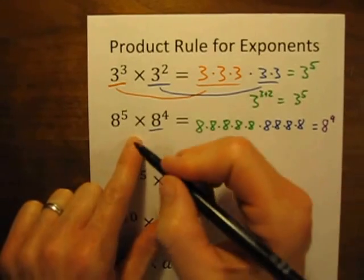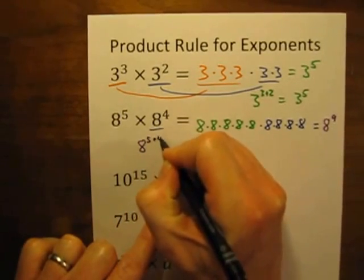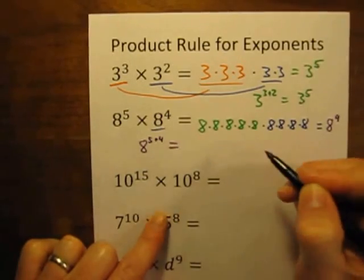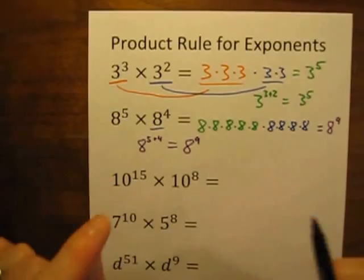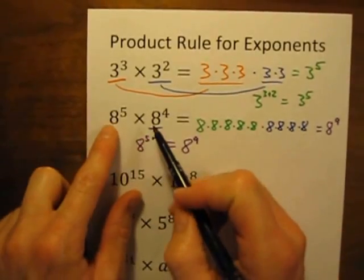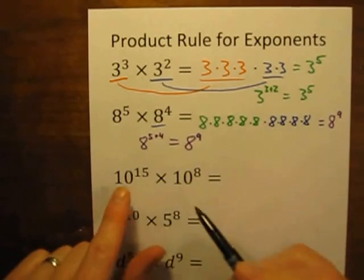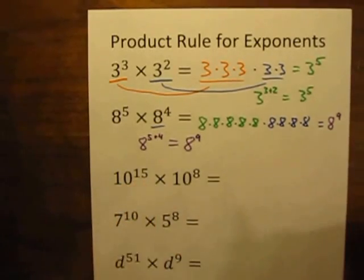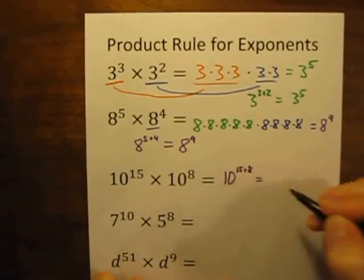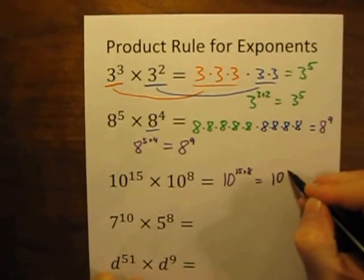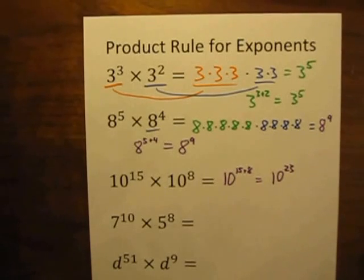Let's look back — this would be 8 to the 5th plus 8 to the 4th, so 8 to the 5 plus 4 is 8 to the 9th. So when you are multiplying exponents and the bases are the same, just add the exponents. So what's 10 to the 15th times 10 to the 8th? That's just going to be 10 to the 15 plus 8, which is simply 10 to the 23rd. We're dealing with huge numbers here, but the problem is still quite easy.